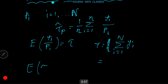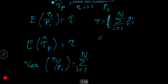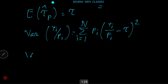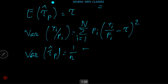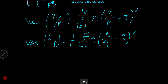Thus, E(τ̂_P) = τ, and τ̂_P is an unbiased estimator for τ. The variance is Var(y_i / Π_i) = Σ(i=1 to n) Π_i × (y_i / Π_i − τ)². Therefore, Var(τ̂_P) = (1/n) × Σ(i=1 to n) Π_i × (y_i / Π_i − τ)². An unbiased estimator for Var(τ̂_P) is given as follows.